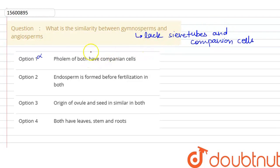They are part of phloem and they are present in gymnosperms. Option 2, the endosperm is formed before fertilization in both which is incorrect.